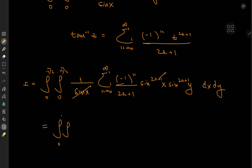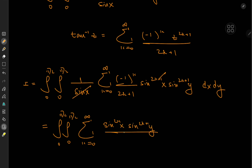So we have the double integral from 0 to pi over 2 of the sum over k from 0 to infinity of sine to the 2k of x times sine to the 2k plus 1 of y over 2k plus 1, dx dy.